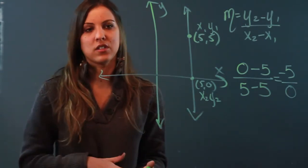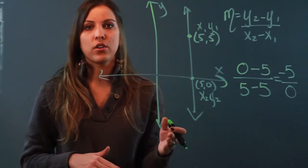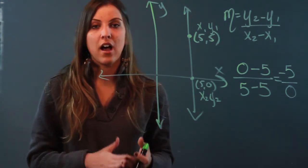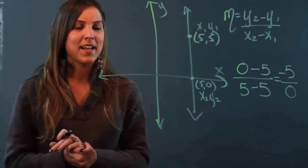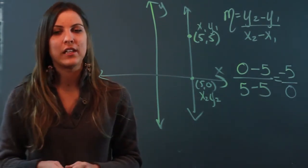That results in an undefined answer. So the slope of a vertical line is not 0. It's undefined, and there's a big difference. So that's your answer to whether or not the slope of a vertical line is always 0.